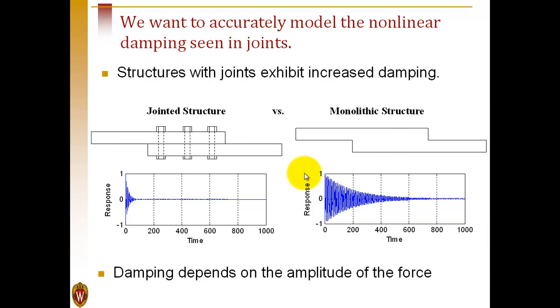For many years, we've known that if we build a structure out of a solid piece of metal, we'll be able to predict it quite effectively using finite element codes, and the response will have very low damping.